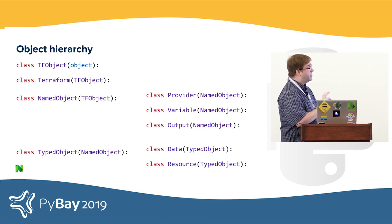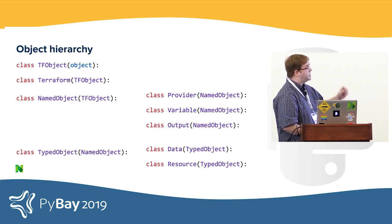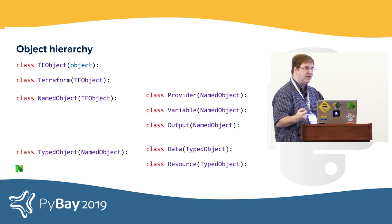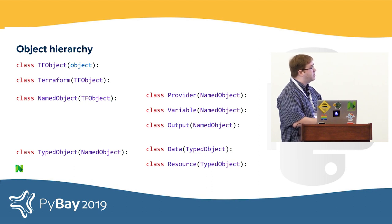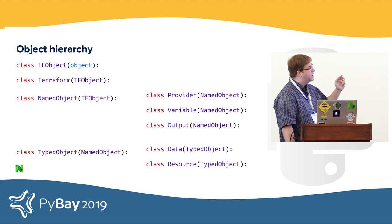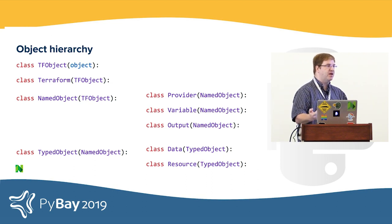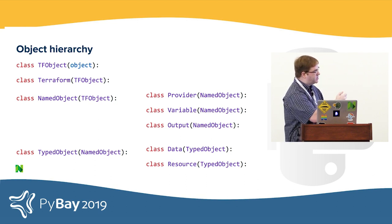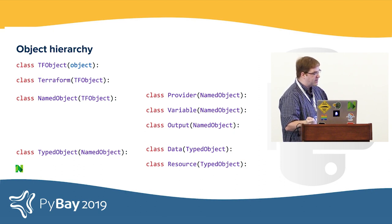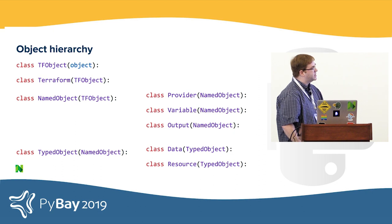I want to talk about our object hierarchy. We have a base TF object which encapsulates a lot of the basic functionality about how we're going to create these objects, create the dictionaries from them, and keep as much common functionality in one place as possible. After that we have two major subclasses: named objects and typed objects, which are reflected by the format that Terraform expects. Some Terraform objects only have a name; others have a name and an ID. And we have several specific subclasses that are light wrappers — like data, provider, and resource — which are the final subclasses in our hierarchy.